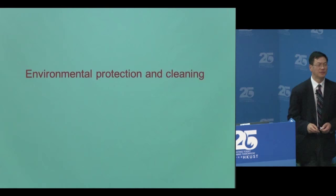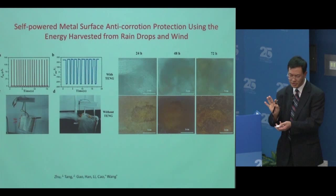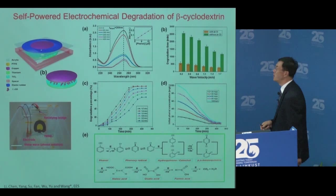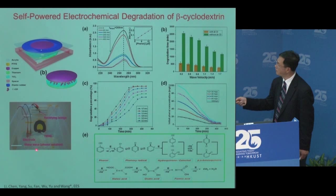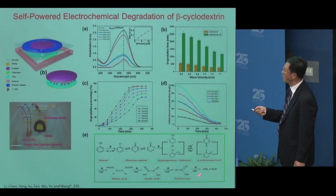For environmental protection: corrosion — anything metal has surface corrosion. Using kinetic energy in water, we convert it to voltage or current to drive a reduction reaction that reduces the corrosion rate of metal surfaces. For water pollution: organic species pollute water — using the kinetic energy of water flow, we generate electricity to degrade organic pollutants for water treatment. These demonstrations are also possible.